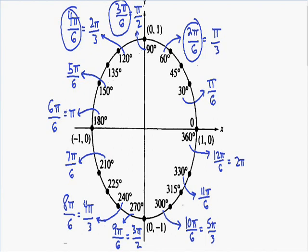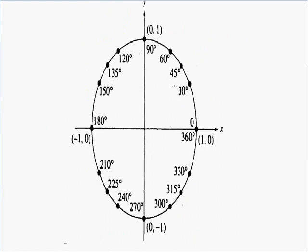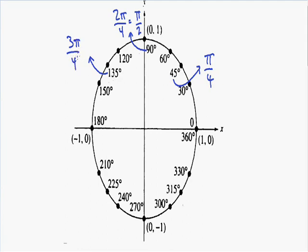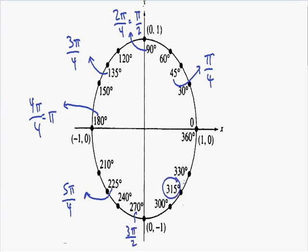Now let's talk about all of the 45-degree angles. Every 45 degrees is pi over 4 radians. So 45 degrees is pi over 4, 90 is 2 pi over 4 which reduces to pi over 2, 135 is 3 pi over 4, and 180 is 4 pi over 4 which reduces to pi. For the full circle: 225 is 5 pi over 4, 270 is 6 pi over 4 which reduces to 3 pi over 2, 315 is 7 pi over 4, and 360 is 8 pi over 4 or 2 pi.